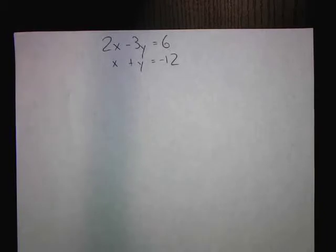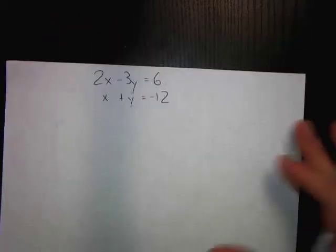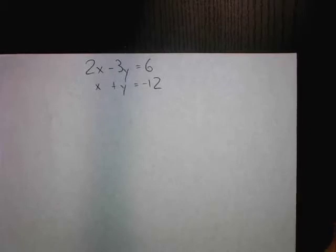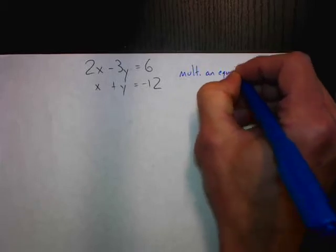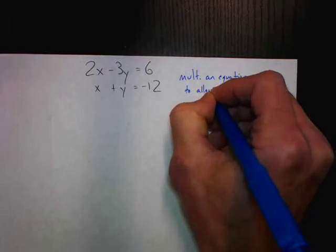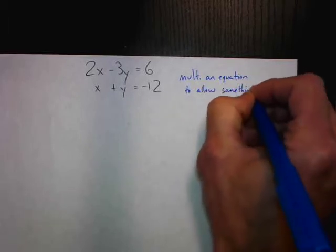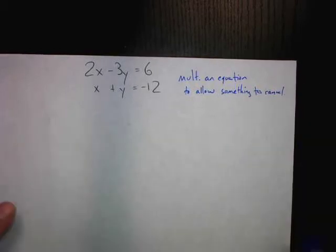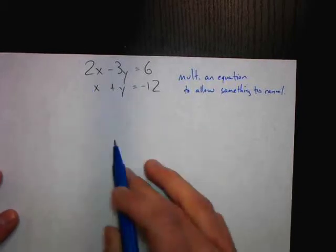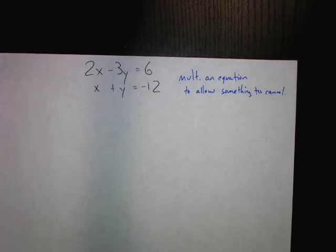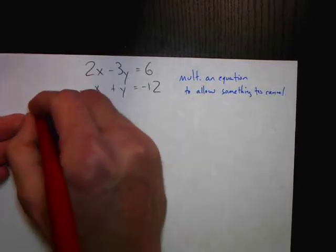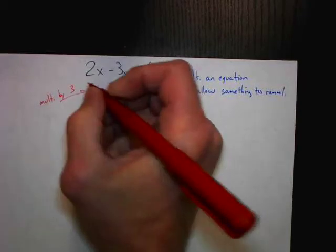Remember that first note — we can manipulate equations. We can multiply an equation by an entire number. So when we look at this system, we have to think: is there something I can multiply one of these equations by to enable a cancellation? We can do many correct things — we could multiply the bottom equation by 2 and subtract, or multiply the bottom equation by 3 and add. What I'm going to do is multiply that bottom equation by 3.